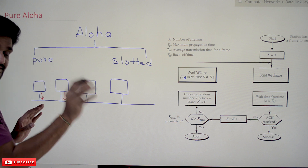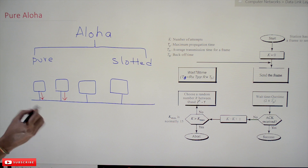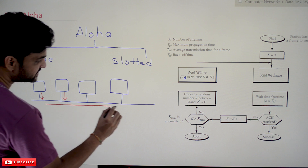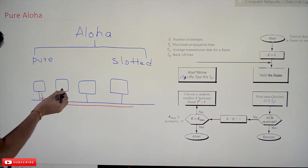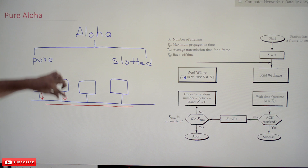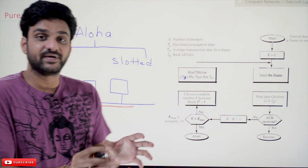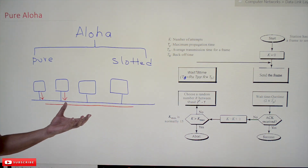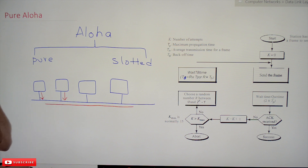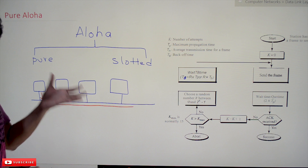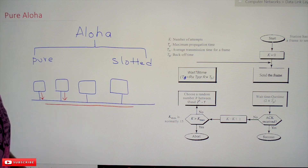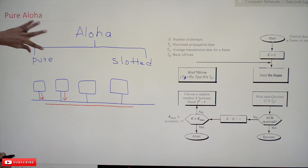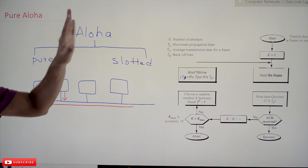At any point of time, if a system decides to send the data, it will transmit it. The problem with this kind of transmission is whenever data is being transmitted in the shared medium and another system wants to send data during that transmission, there will be a collision. The data will be destroyed or discarded. This is the problem with shared medium systems. This collision problem has to be addressed, and that is what Pure Aloha is going to do.